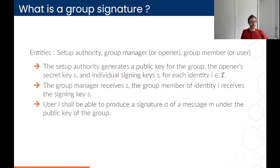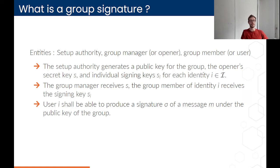What we want is that some user with identity I should be able to produce a signature sigma of some message M that is valid under the public key of the whole group — a signer should sign on behalf of the whole group. We also want that this signature doesn't give away the signer's identity, so we shouldn't know who the signer is apart from the fact that he belongs to the group.